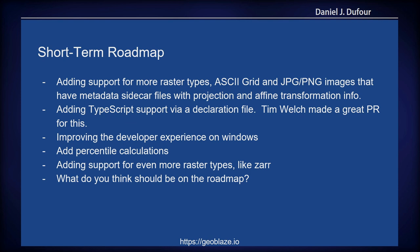We have a short-term roadmap but not a long-term roadmap, because I'm looking at all of you and want to know what your long-term roadmap is for GeoBlaze. Our short-term roadmap includes adding support for more raster types like ASCII grid, and also geo-referenced images that have a dot PRJ, an auxiliary XML file, or a world file. We're also adding TypeScript support — Tim Welch made a great PR for that, and I have to follow up with him on it.